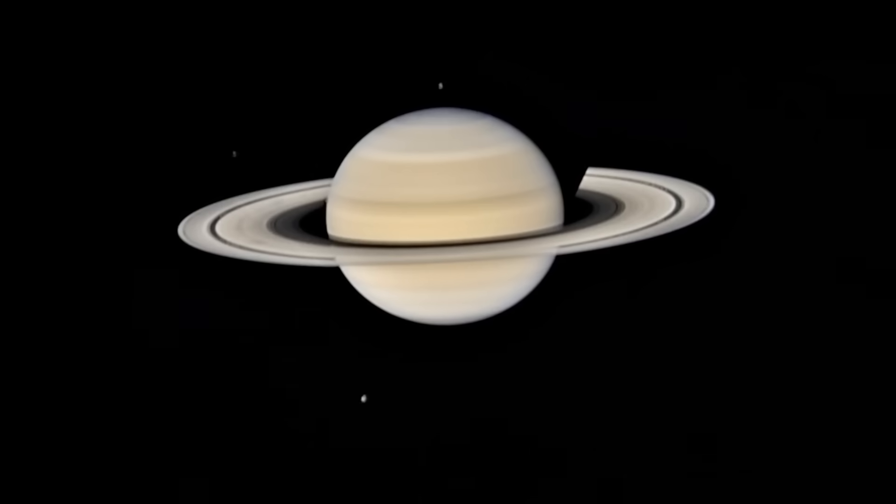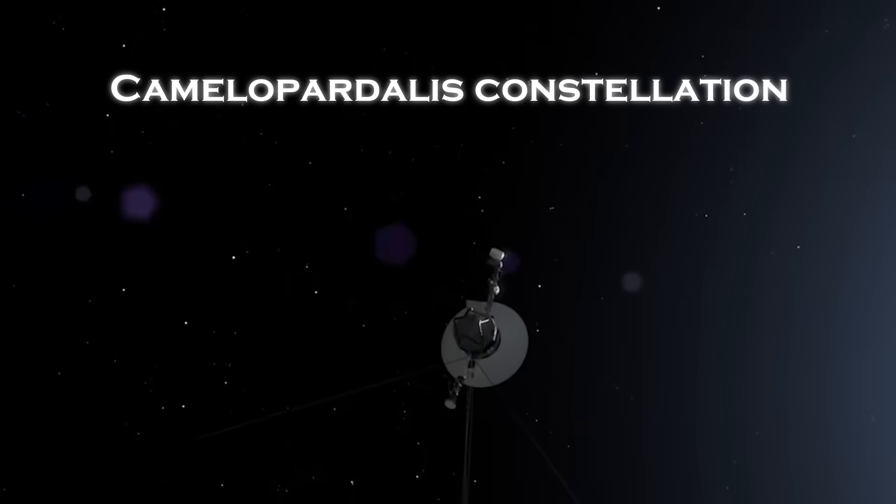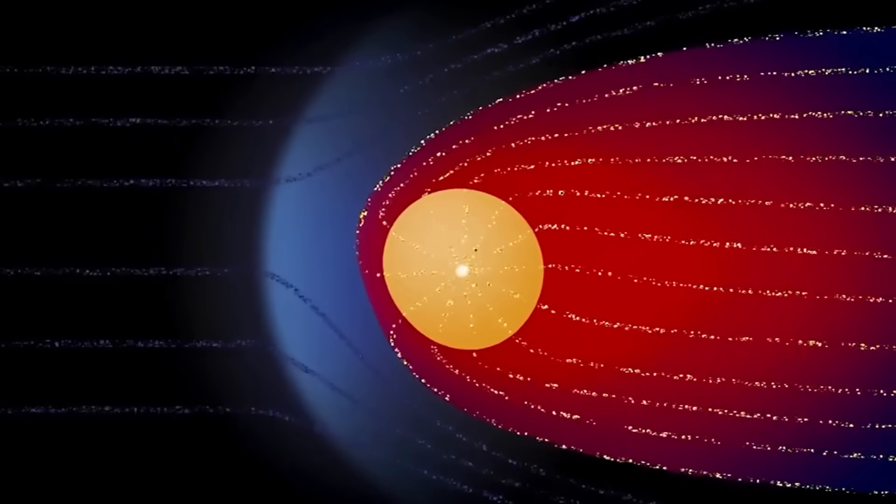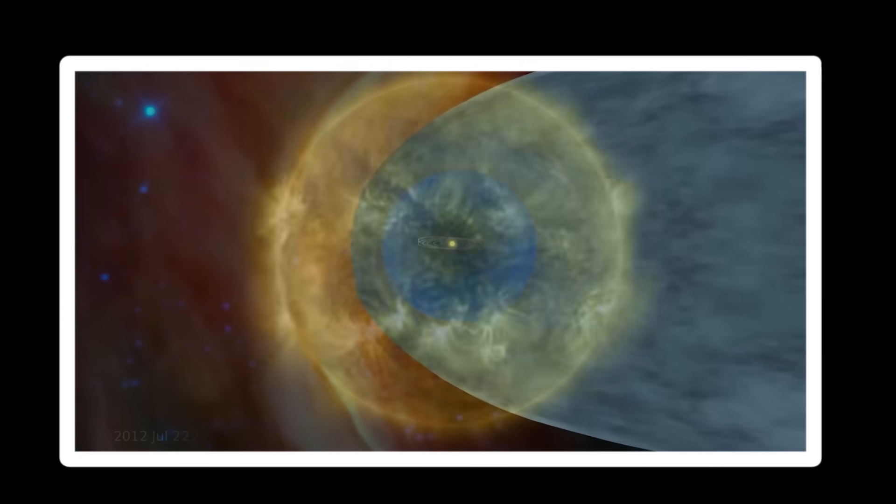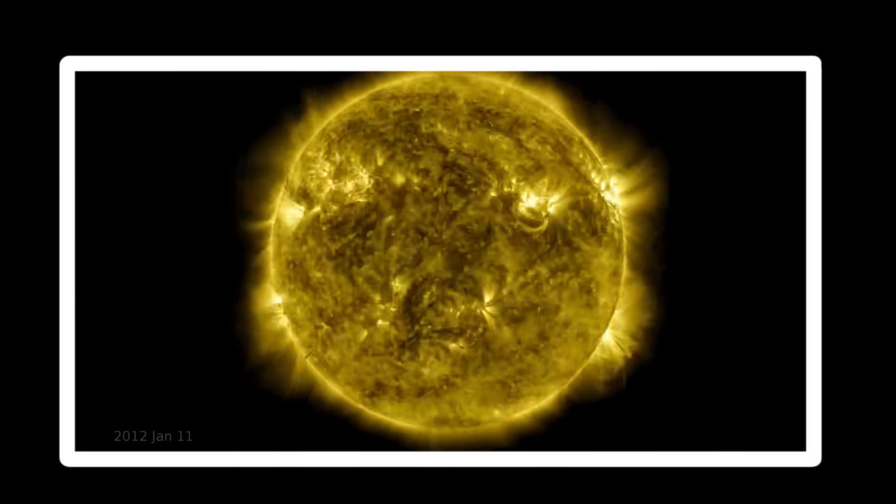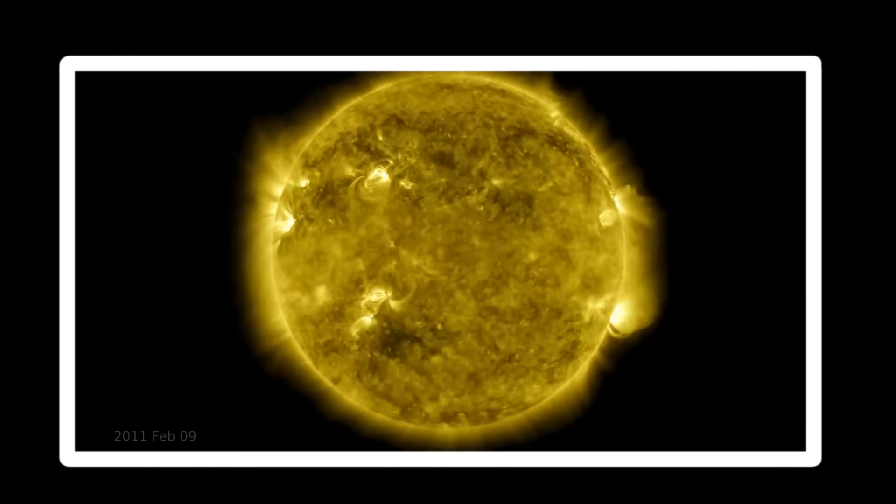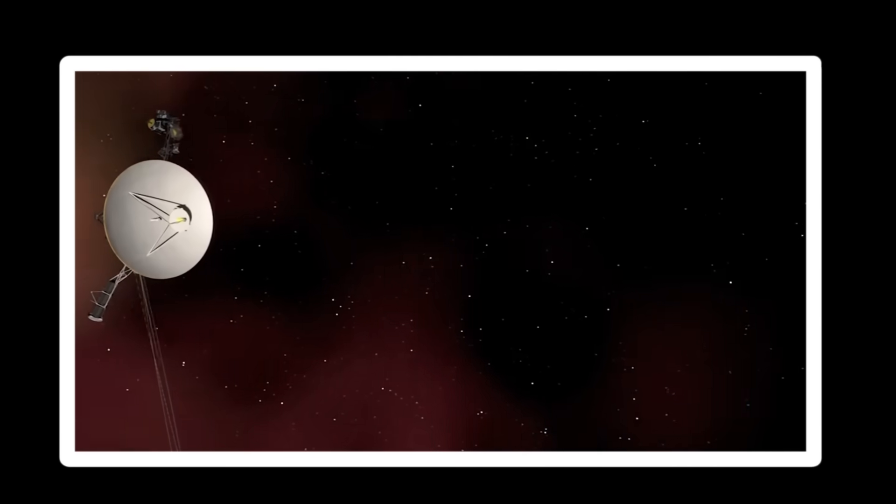But Voyager's journey won't end. Even when the signals stop, even when Earth is no longer listening, both probes will continue to drift silently through the galaxy. Voyager 1 is headed toward the Camelopardalis constellation, and in 40,000 years it may pass close to another star. Voyager 2 will brush past Ross 248 in just under 300,000 years. And if by some impossible chance they are intercepted by a civilization more advanced, by a sentient species unlike our own, they will find the golden records aboard—messages in 55 languages, music, sounds of Earth, greetings from humanity. Proof that we were here, that we dared to reach, that we sent out a voice into the dark hoping someone, someday, might answer.